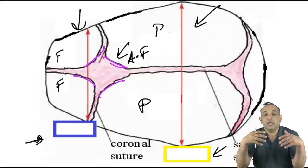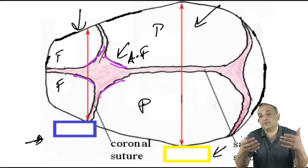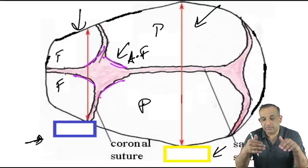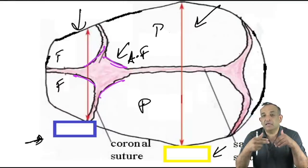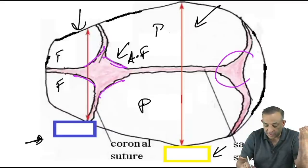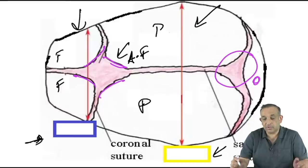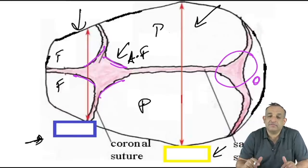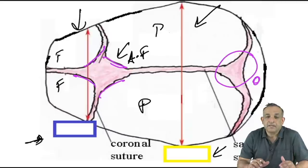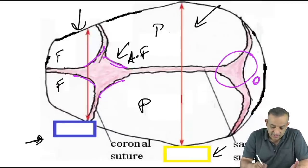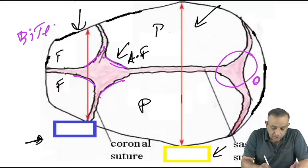When you do a per-vaginal examination, you cannot see the baby through the vagina in the labor room. How do you make out whether there is occipital anterior or occipital posterior? We do a per-vaginal examination and feel the occiput bone. Near the occiput there's a triangular fontanelle, because there are two parietal bones but only one occipital bone. The anterior fontanelle is quadrilateral.